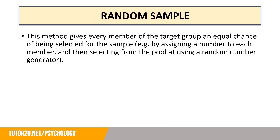Let's begin by recapping random sampling. Arguably this is one of the easiest sampling techniques to talk about. Random sampling gives every member of the target group an equal chance of being selected for the sample. We might assign a number to each member and then select them using a random number generator — that tends to be the most common method — or you might put names in a hat and randomly pull them out to select your sample.